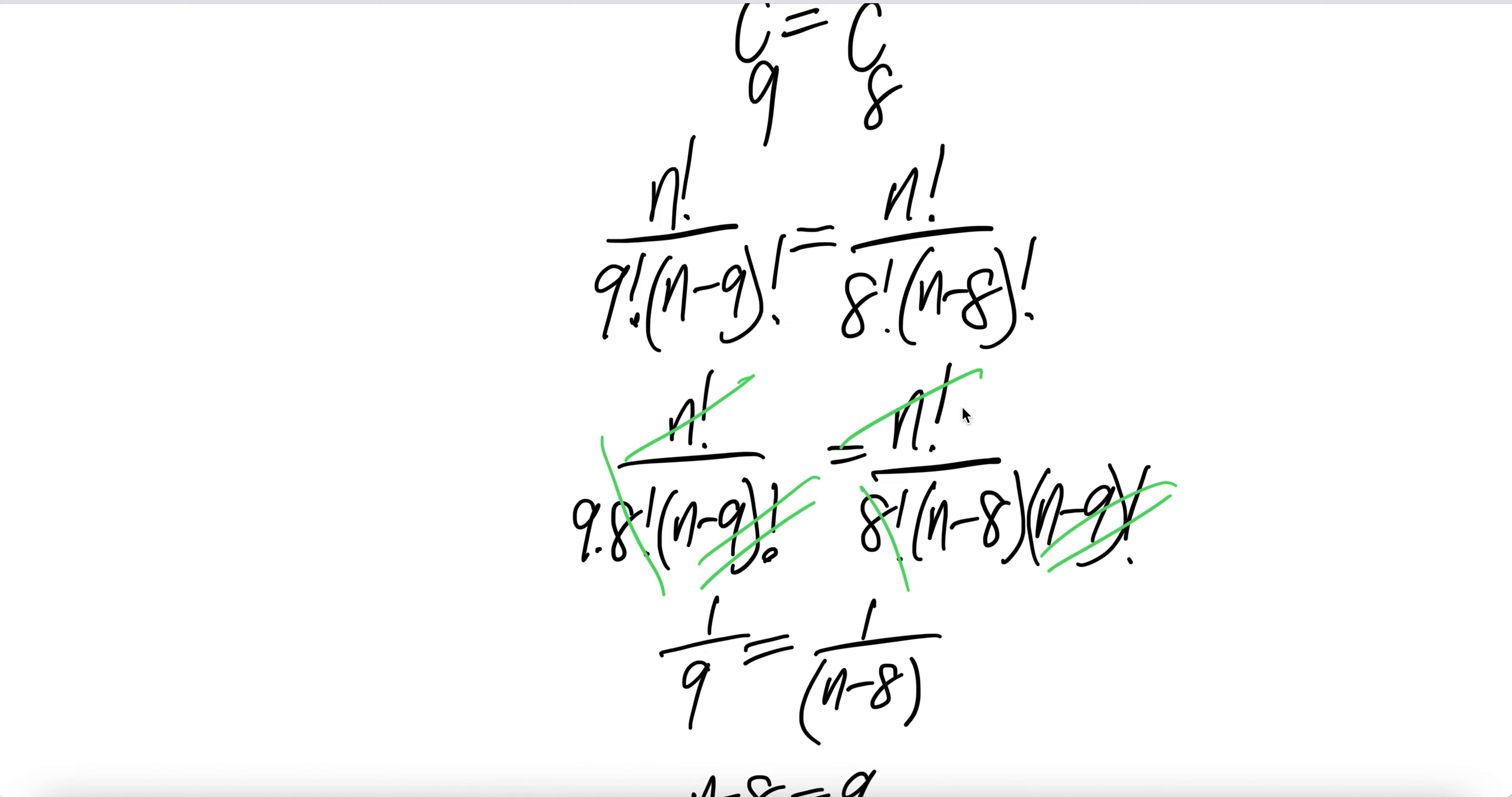n factorial n factorial cancel. And then we can write 9 factorial as 9 times 8 factorial. This piece, put it here. And then 8 factorial, put it there. And then we can write n minus 8 factorial as n minus 8 times n minus 9 factorial.